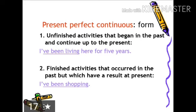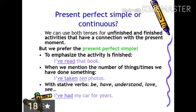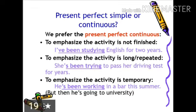We can use both present perfect simple and continuous for unfinished and finished activities connected to the present, but we prefer present perfect simple to emphasize the activity is finished, for example, I have read that book. Also when we mention the number of times we have done something, for example, I have taken ten photos. Also with stative verbs such as understand, love, see, etc., for example, I have had my car for years.